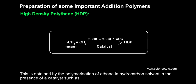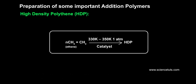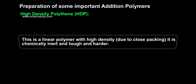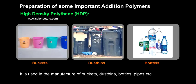High-density polythene (HDP): This is obtained by the polymerization of ethene in a hydrocarbon solvent in the presence of a Ziegler-Natta catalyst (triethylaluminium and titanium tetrachloride), at a temperature of 333 K to 343 K and a pressure of 6 to 7 atmospheres. It is a linear polymer with high density due to close packing, chemically inert, tough, and harder. It is used in the manufacture of buckets, dustbins, bottles, pipes, etc.